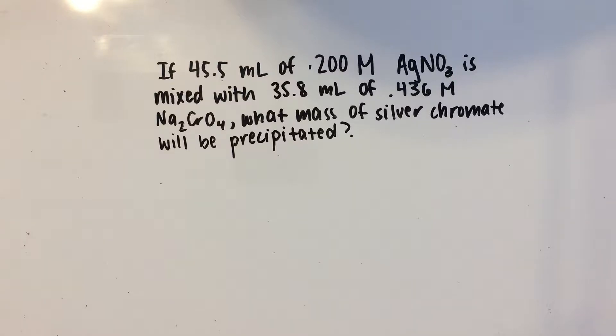Here we have a stoichiometry problem asking: if 45.5 milliliters of 0.2 molar AgNO3 is mixed with 35.8 milliliters of 0.436 molar Na2CrO4, what mass of silver chromate will be precipitated?